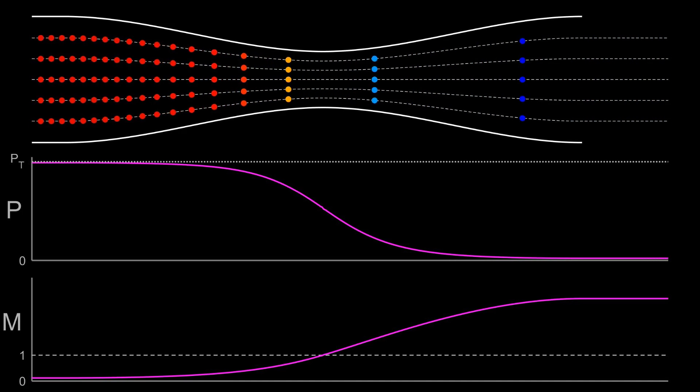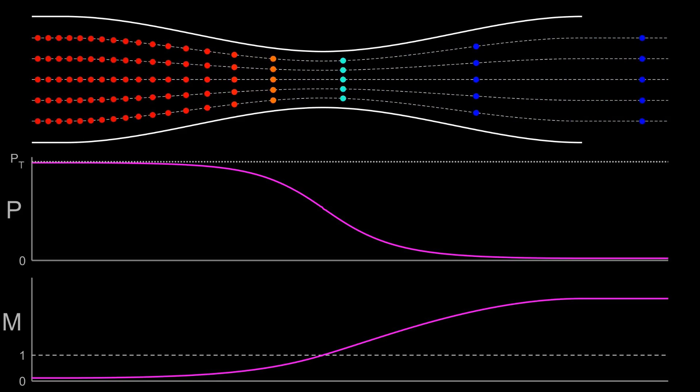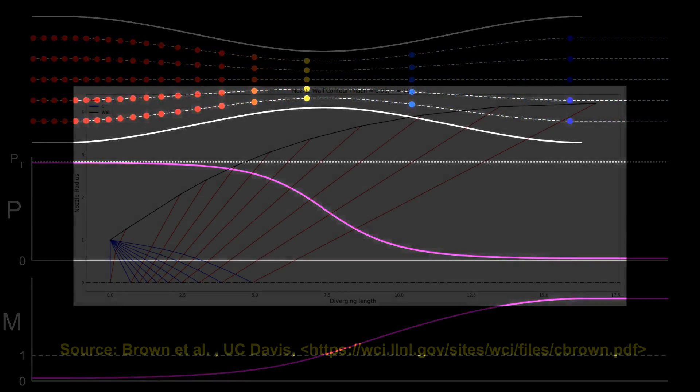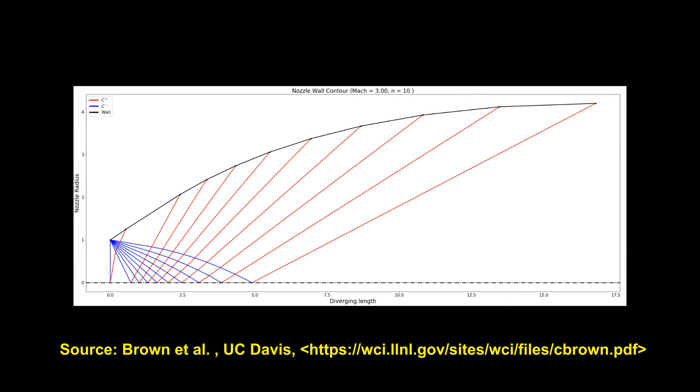The flow can communicate vertically at roughly the speed of sound, but it's travelling through the nozzle at multiple times the speed of sound. So this vertical communication is really diagonal. This idea is the basis of the method of characteristics which we may discuss in a later video.